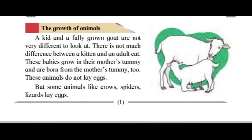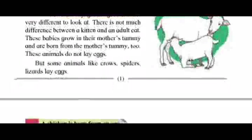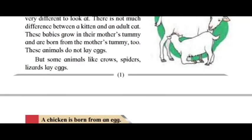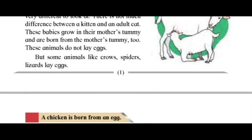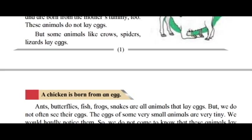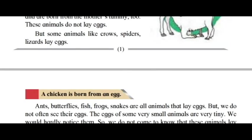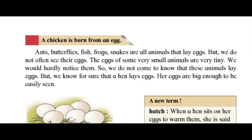There is not much difference between a kitten and an adult cat. These babies grow in their mother's tummy and are born from the mother's tummy too. These animals do not lay eggs. But some animals like crows, spiders, and lizards lay eggs. A chicken is born from an egg, and butterflies, fish, frogs, and snakes are all animals that lay eggs.